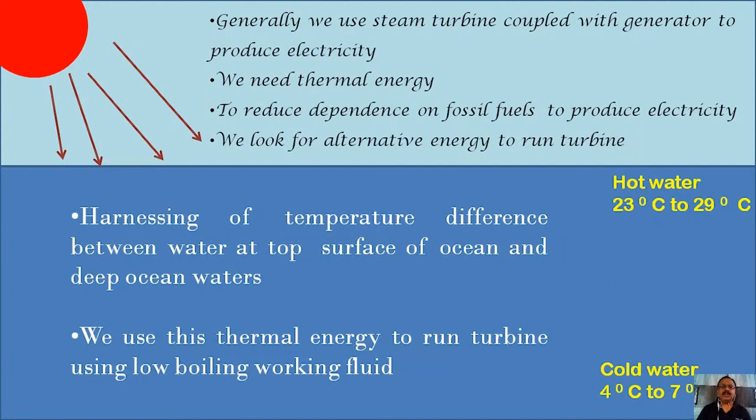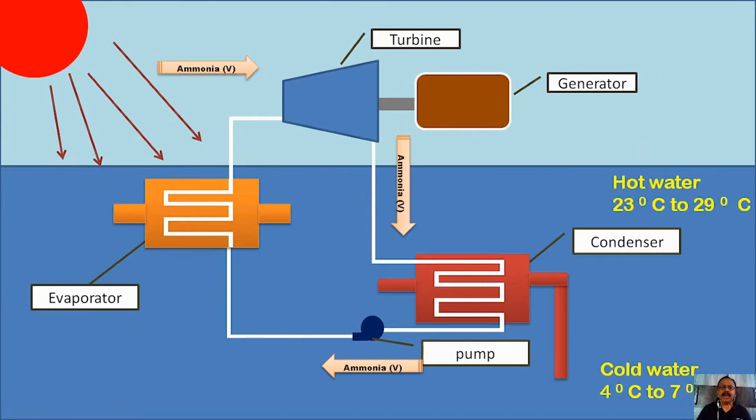Let's look at the layout of the thermal power plant. We have a turbine, we have a generator which has been coupled with it, along with which we need an evaporator and we need a condenser.